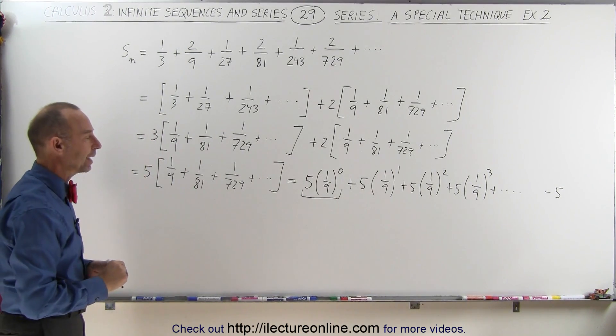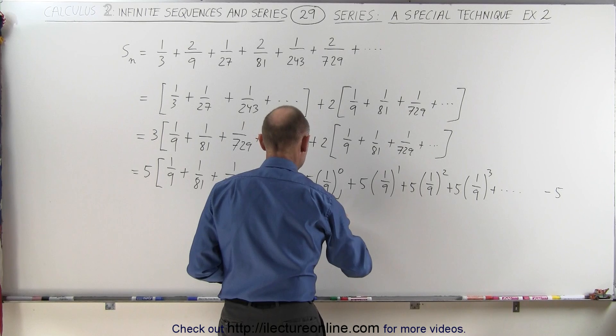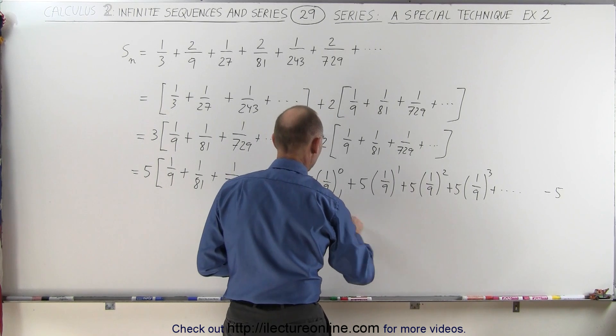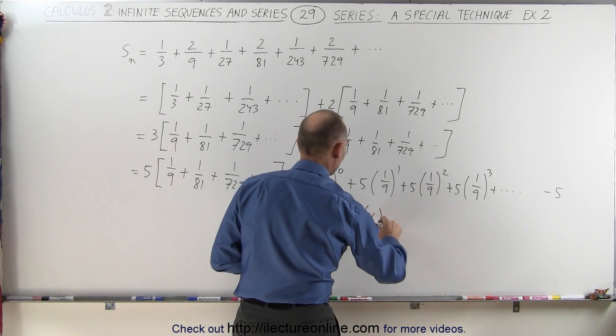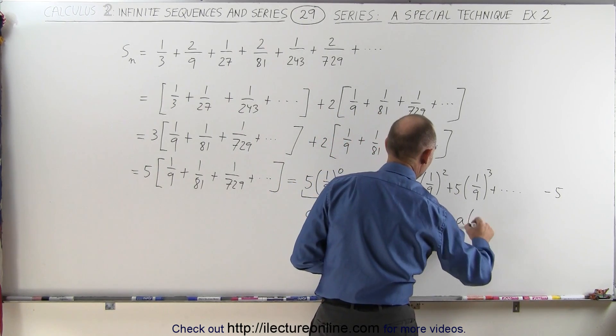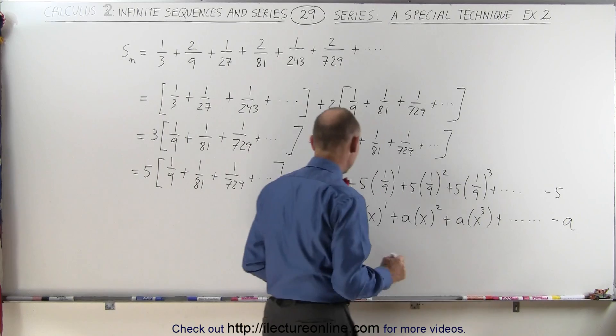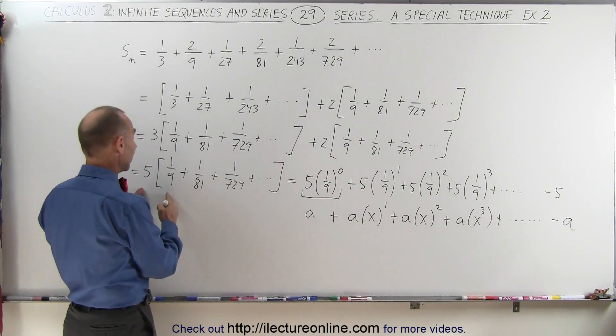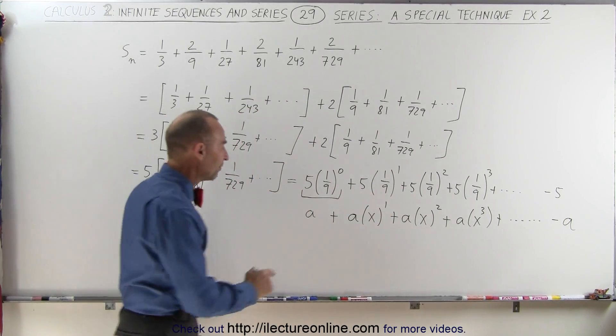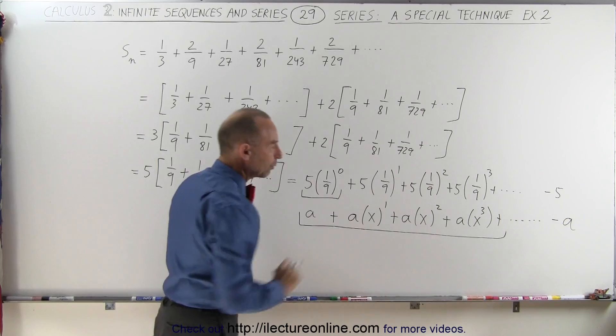So I'll subtract minus 5 at the very end. But when I write it like this, it looks very much like a + ax + ax² + ax³ + and so forth, minus a. The a is not there initially—I have 5 times 1/9 which is my second term—I just didn't have the first term. But if I include this here and subtract from the end, then this is what we call a geometric series, of course out to infinity.